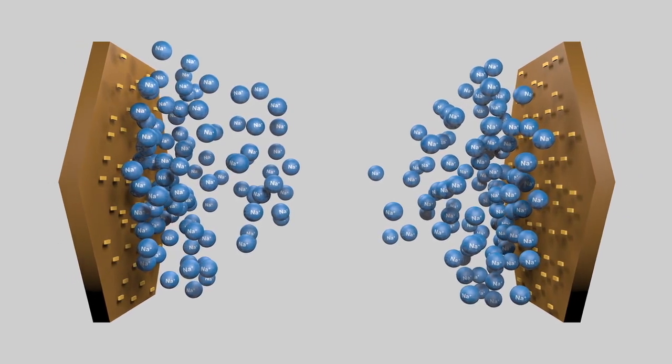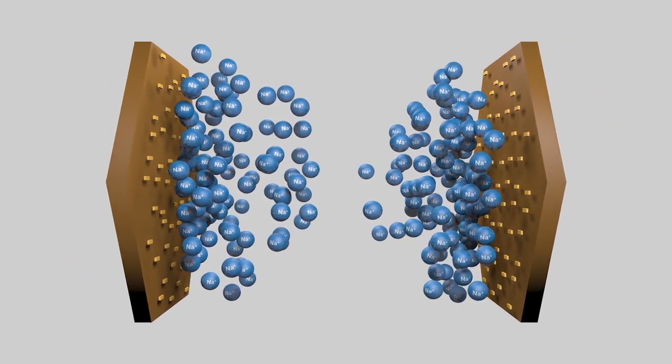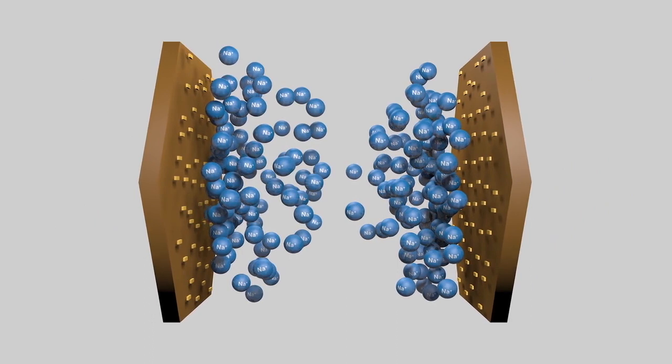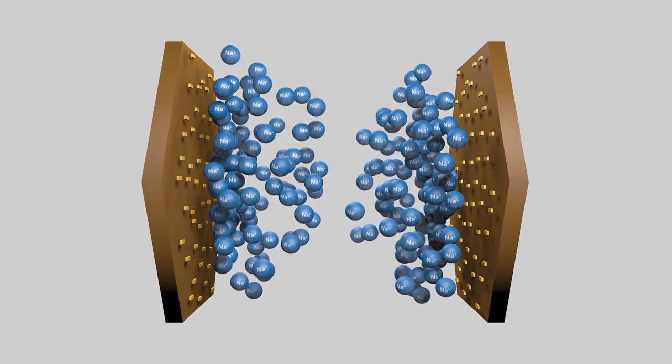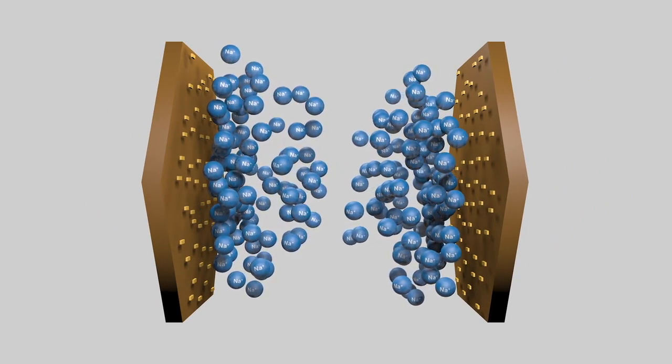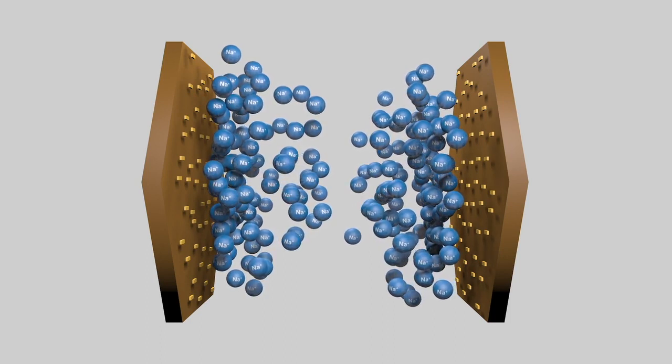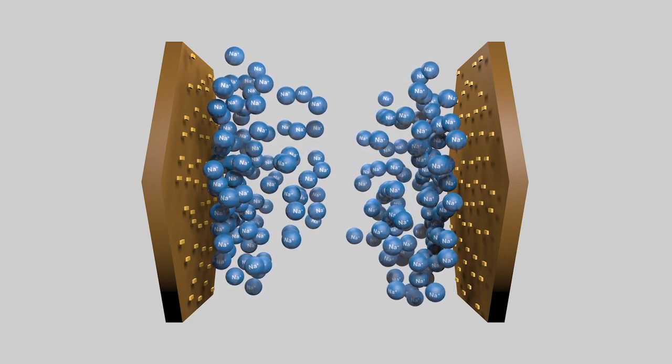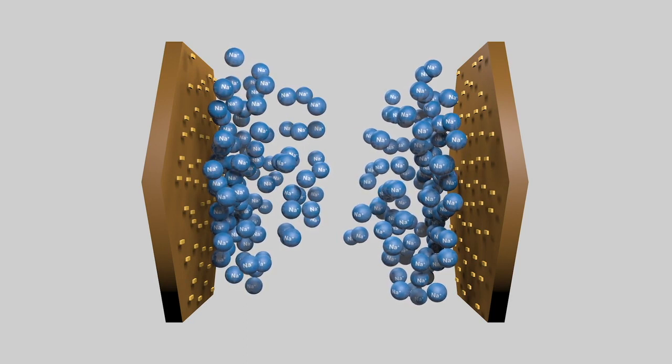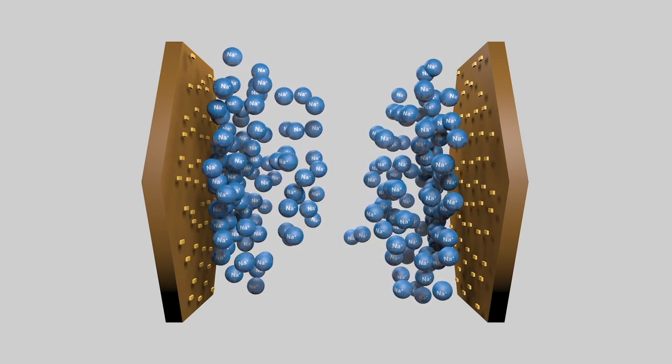the clouds of cations on each side repel each other, and the clay platelets remain separated. This is what we mean by clay dispersion due to sodicity, the dispersion of clay platelets because of the adsorption of sodium ions onto clay particle surfaces.